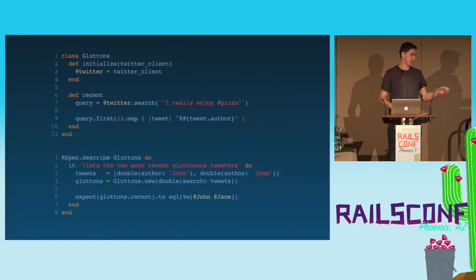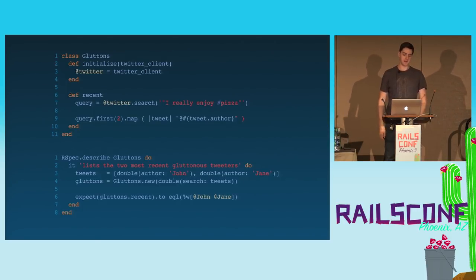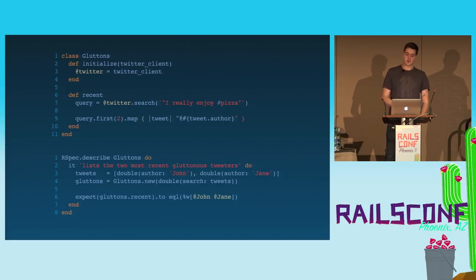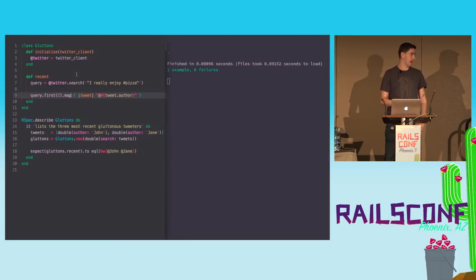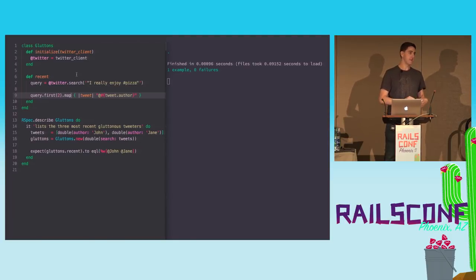I've got some sample code here. I've got a class called Gluttons at the top. I initialize it with a Twitter client, then do a search on the Twitter API using that client. I get the first two results, grab the author from it, and return that. The test specifies this below — it's got a fake client and some fake tweets. On the left I've got the same code in Sublime Text, and on the right a script that runs whenever I modify the file, outputting a diff and the result of running the tests.